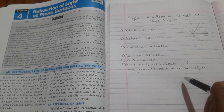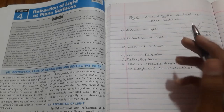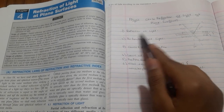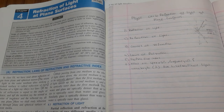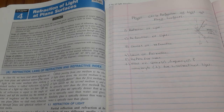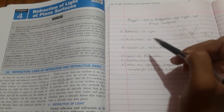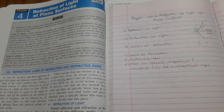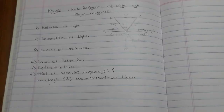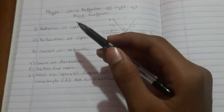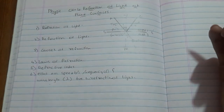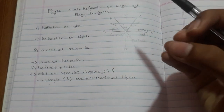First we will learn about reflection of light. In our previous class we have already learned about reflection of light, but we will cover it again here. What do you mean by reflection of light? Reflection means the return of light on the same medium after striking a polished surface — this is called reflection of light.